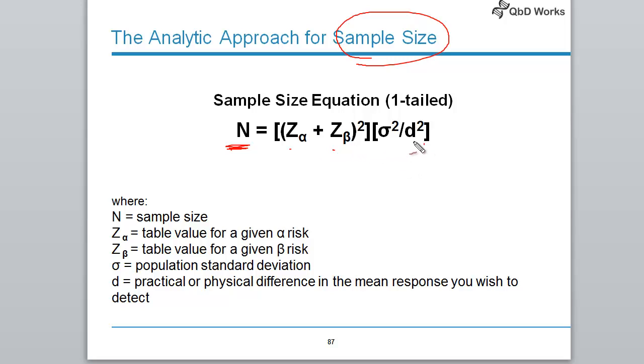So what do you need? First, you need to know the delta, the practical or physical difference in the mean response you wish to detect, meaning when should I care about the critical attribute or quality attribute, the difference that you'll be seeing, the delta of the Y. You need to know that, define that first.